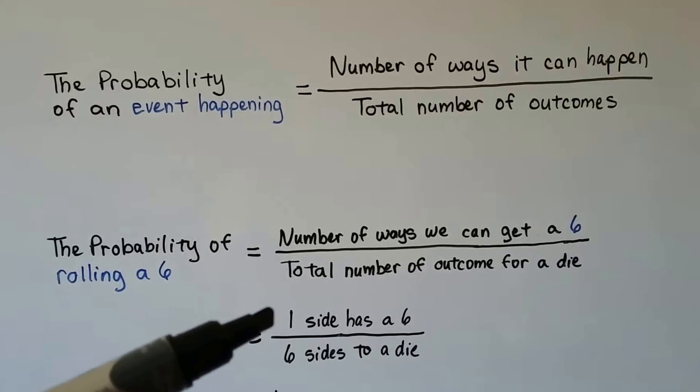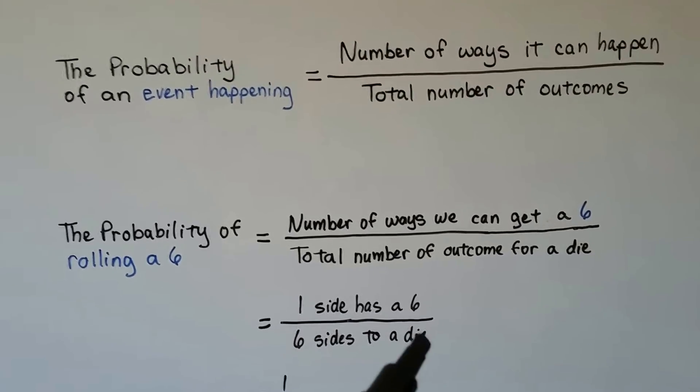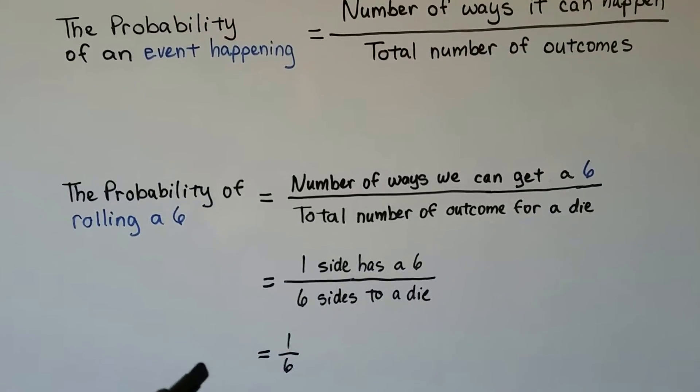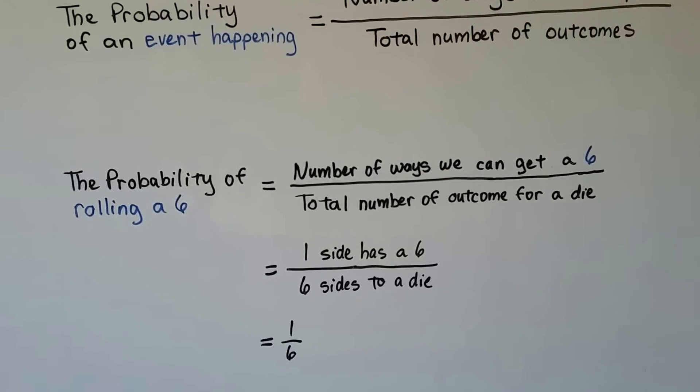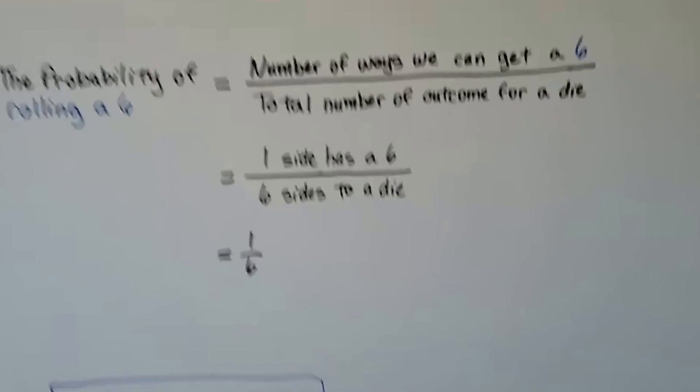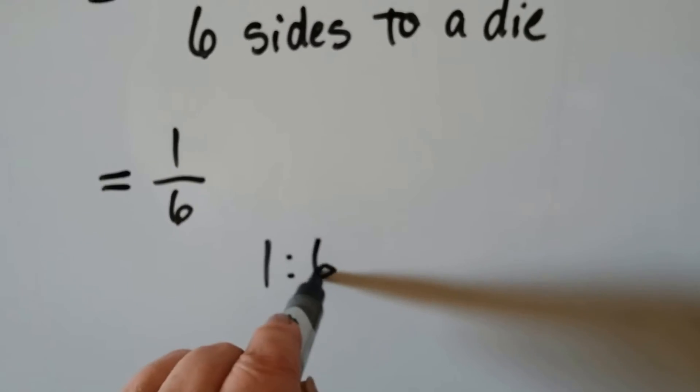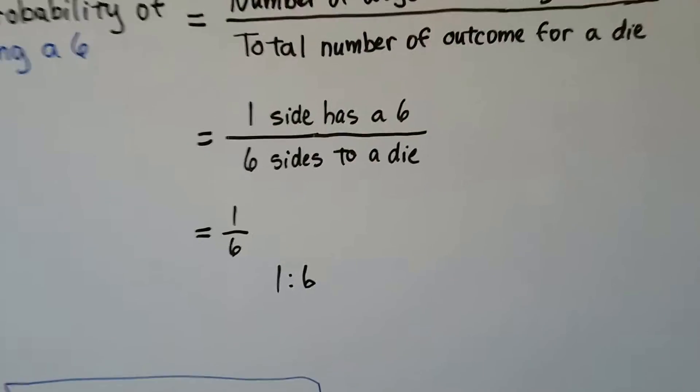There's only one side on a die that has a six, and there's six sides to a die, so the probability of rolling a die is one out of six. We have a one to six chance. We could even say it's a one to six chance like that.